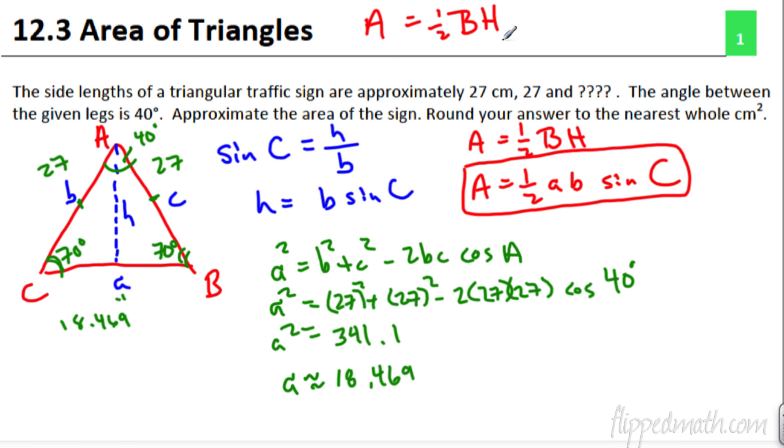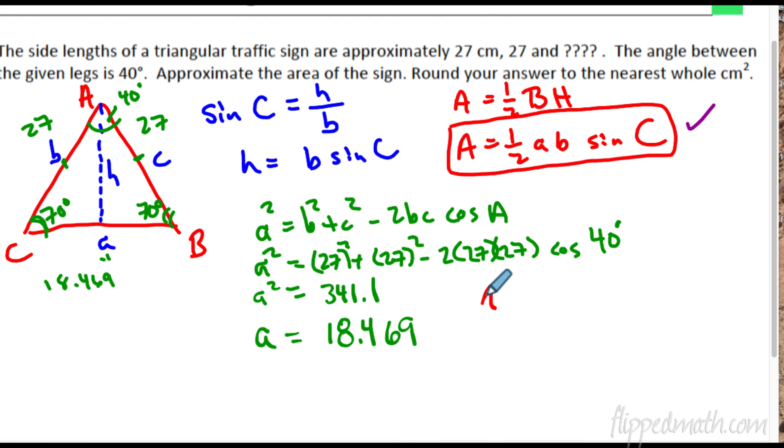So now we're going to use our trusty new formula here. So, the area equals one half AB times the sine of C. So, the area is going to equal one half. A is going to be that last answer we got, 18.469 times B, which would be 27, times the sine of C, and C is 70.